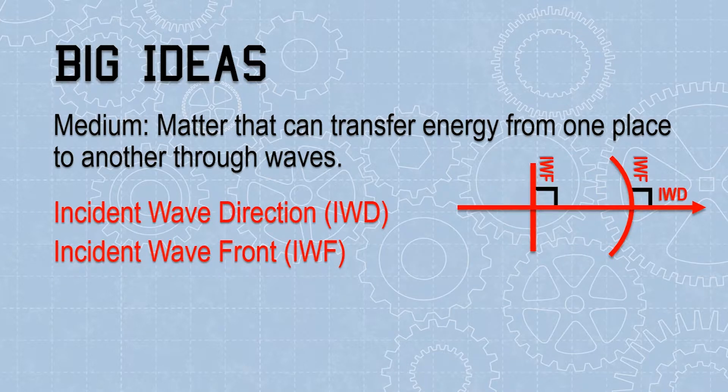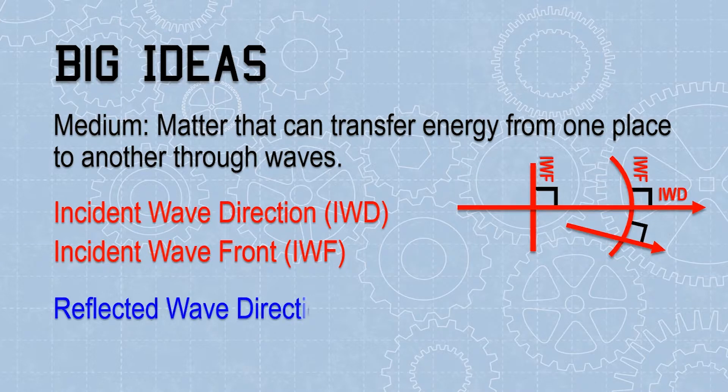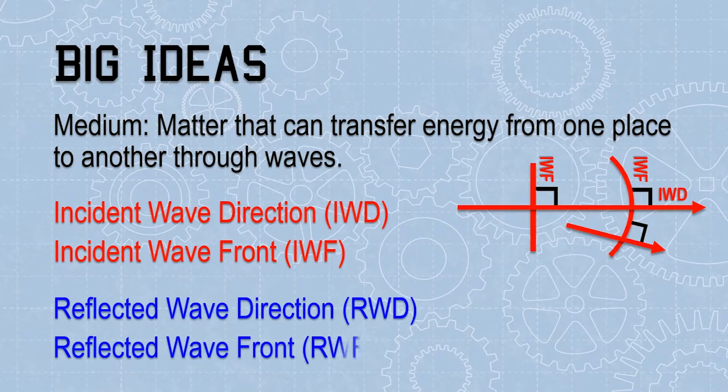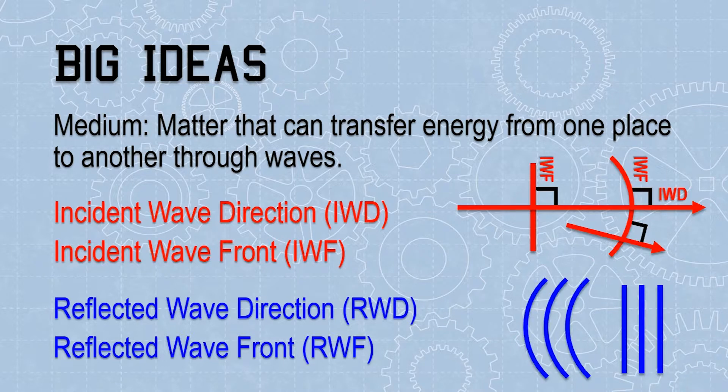This is true whether the wave is plain or curved. If this incident wave reflects off a barrier, it will create a reflected wave, which has a reflected wave direction and reflected wave fronts. The relationship between reflected wave fronts and reflected wave directions is the same as incident wave fronts and incident wave direction.